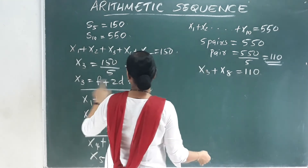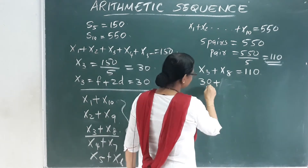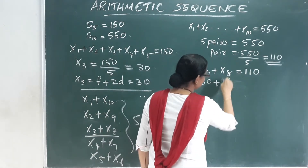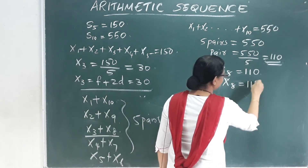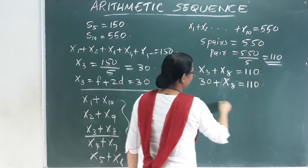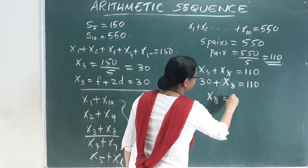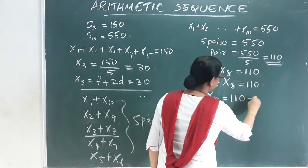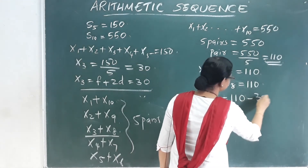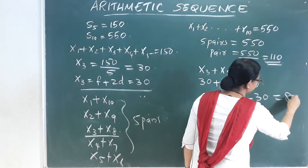Since x3 is 30, we have 30 plus x8 equals 110. That means x8 equals 110 minus 30, which equals 80.